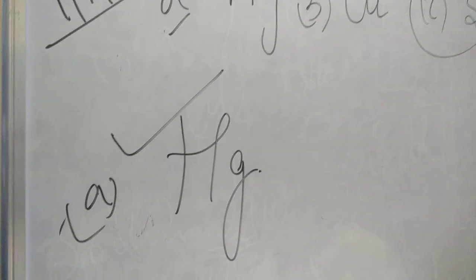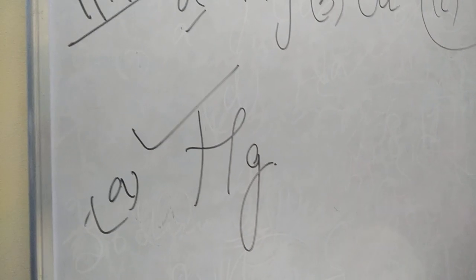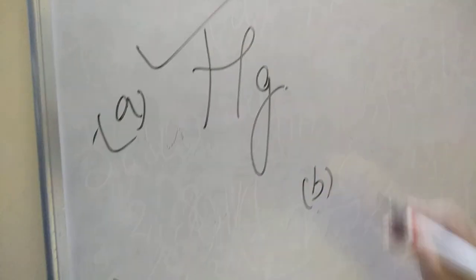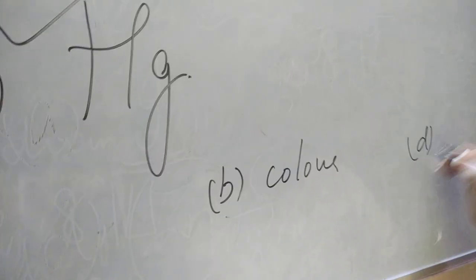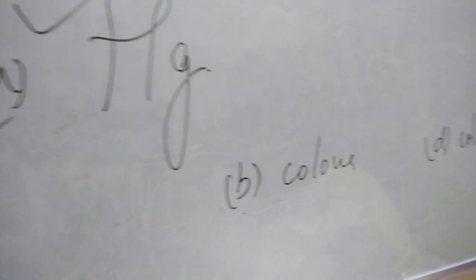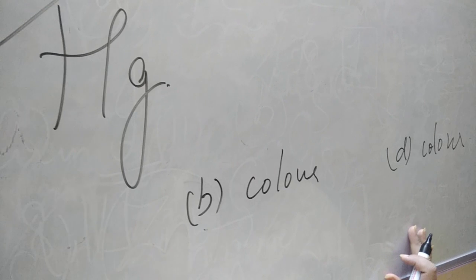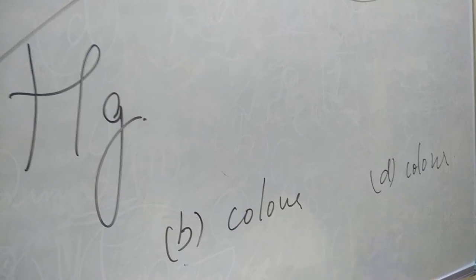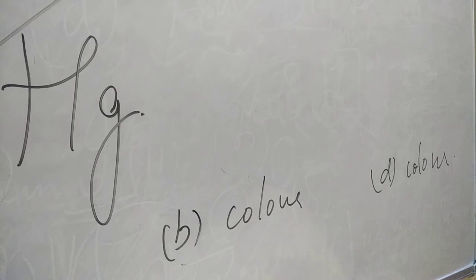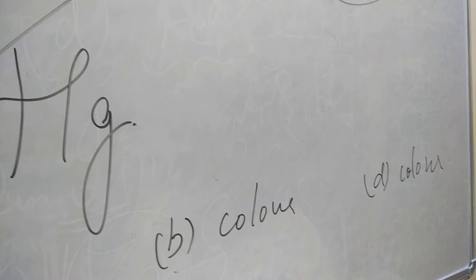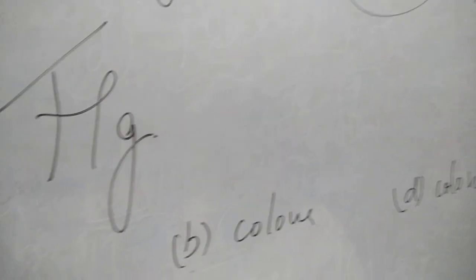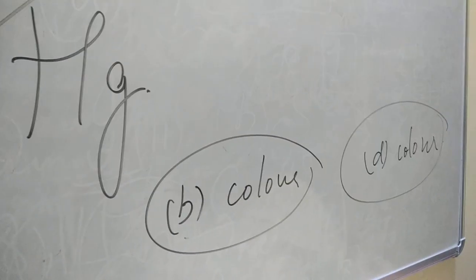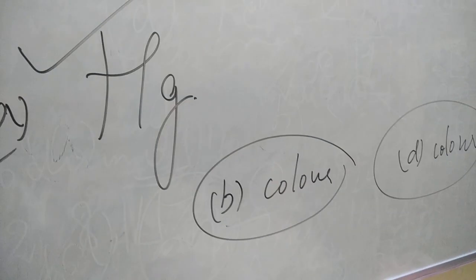Question 5: Which of the following properties is NOT responsible for copper being used as an electrical conduction wire? Options B and D both say 'color.' For electrical conduction, color does not matter at all. So the answer is both B and D — color.